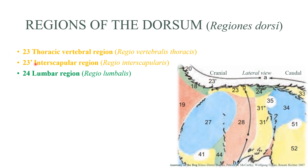Also number 23 in yellow, but this little dot right here — this region is the intrascapular region, basically the region between the two scapulas. One scapula would be here and the other on the opposite lateral side. And the last one is the lumbar region, regio lumbalis, right here — the region between the thoracic and the pelvic region, shown in green as number 24.